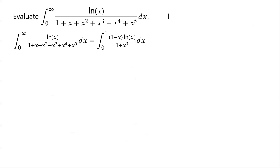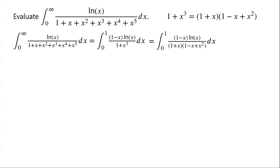We know that 1 plus x³ equals (1 plus x) times (1 minus x plus x²). So we can now write this equals the integral from 0 to 1 of (1 minus x) times ln(x) over (1 plus x) times (1 minus x plus x²), dx. Note that the denominator has the item (1 minus x plus x²) and the numerator has the item (1 minus x). So we add and subtract x² to split the integral into two pieces.